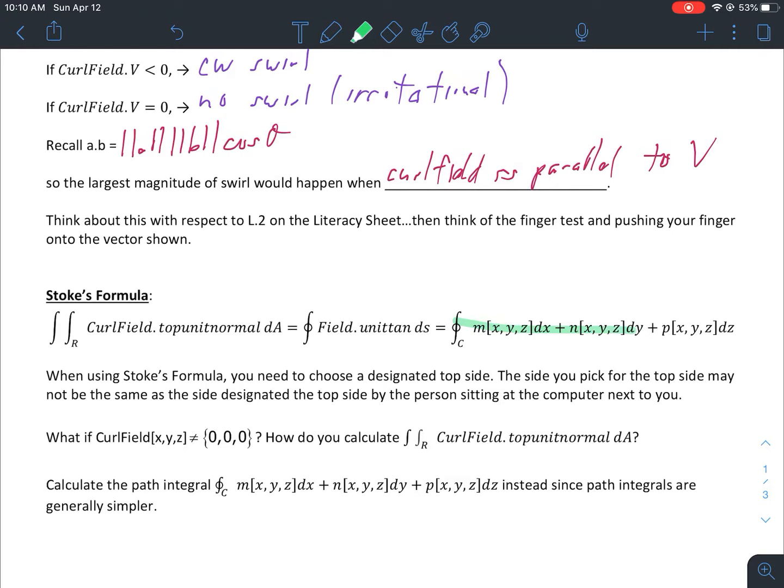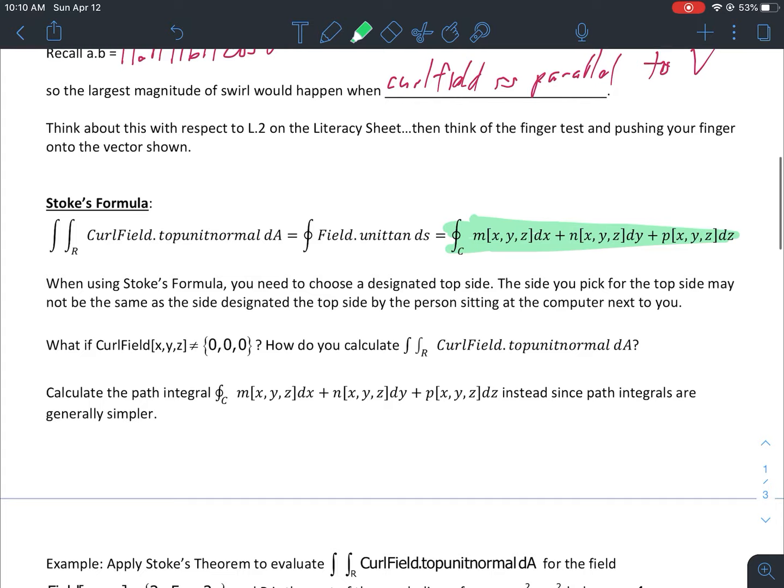The big thing in chapter 13 is Stoke's formula. You can see here this is Stoke's formula - obviously the whole thing is Stoke's formula, has proven that they were equal, but that's the one we'll be using a lot when we do our calculations later on by hand. When using Stoke's formula, you need to choose a designated top side. The side you pick for the top side may not be the same as the side designated by the person sitting next to you.